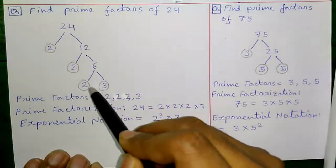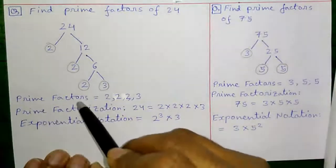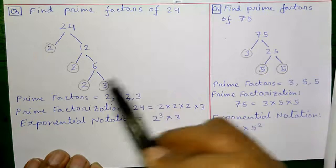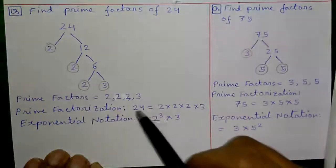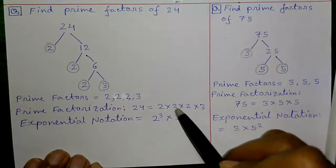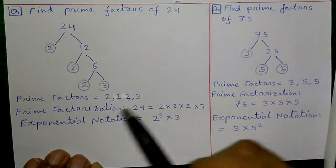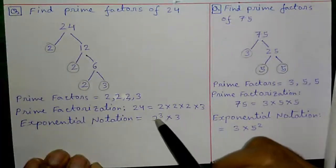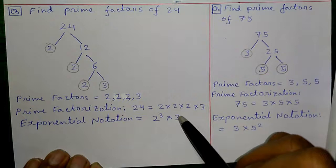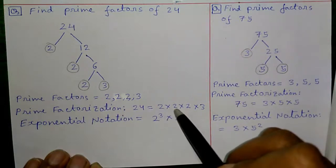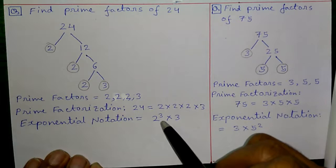Which gives us the prime factors. I have highlighted them in circles. So the prime factors are 2, 2, 2 and 3. And prime factorization is 24 equals to 2 into 2 into 2 into 3. And the exponential notation will be 2 cube into 3. Because we know 2 into 2 is 2 square and 2 into 2 into 2 is 2 cube.